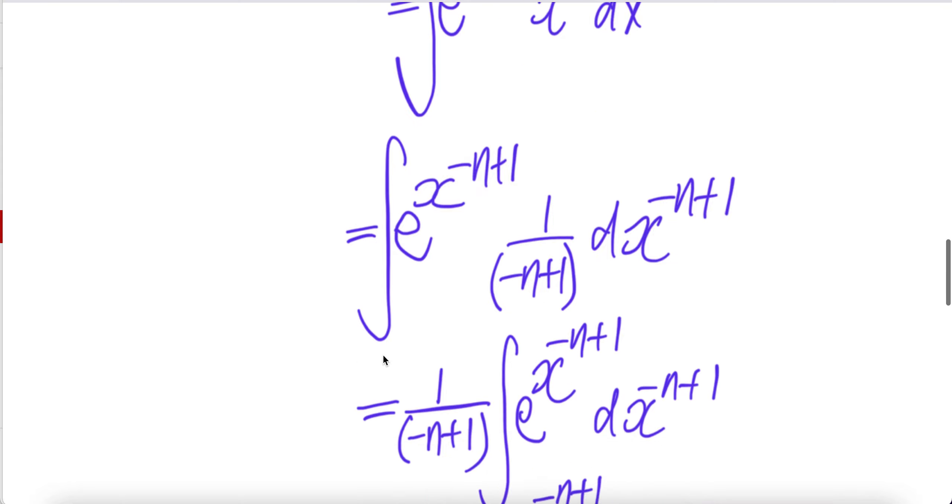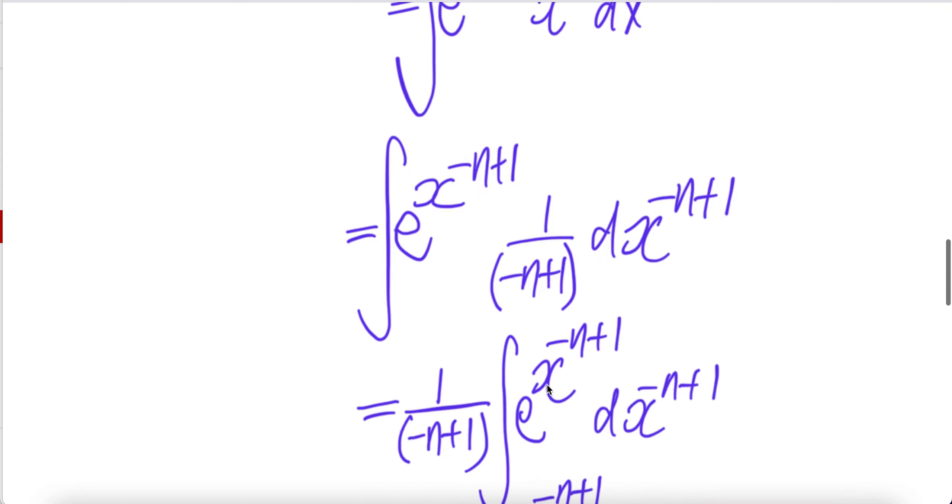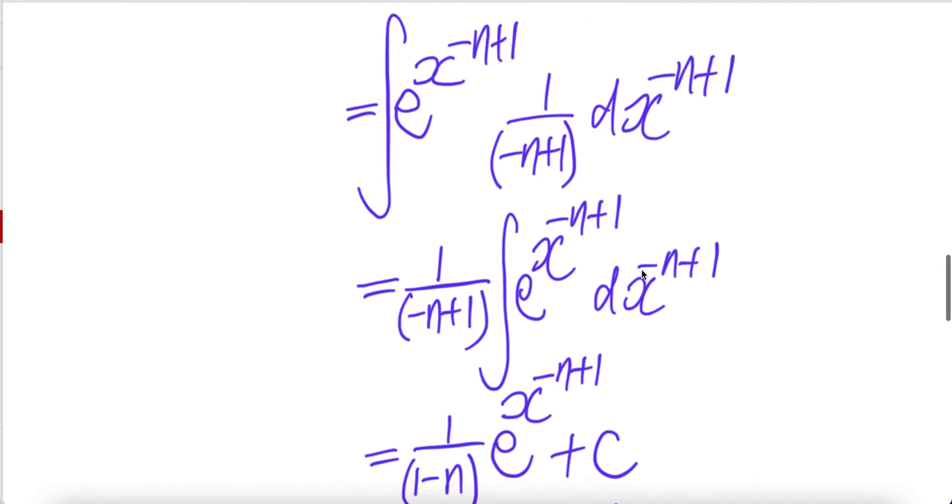Constant out of the integral and the integral e to the power x to the power negative n plus 1, dx to the power negative n plus 1. Integral of this is e to the power x to the power negative n plus 1 plus c.